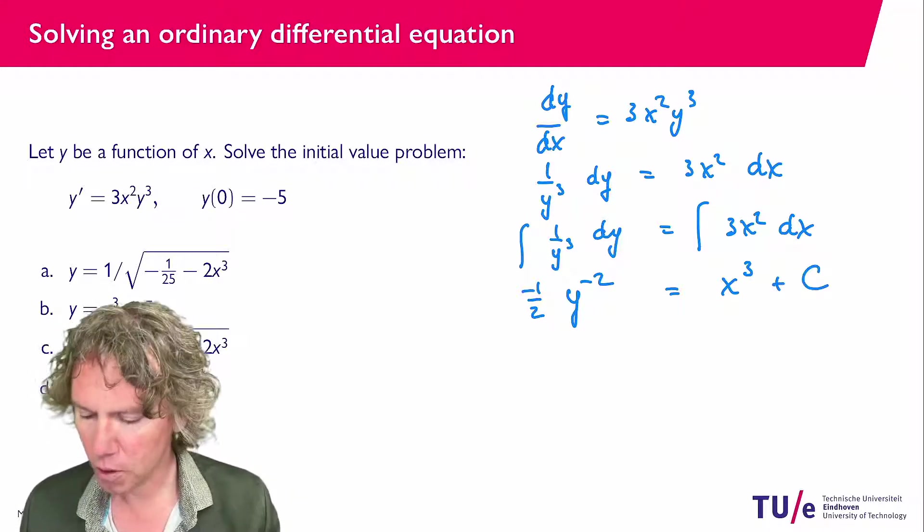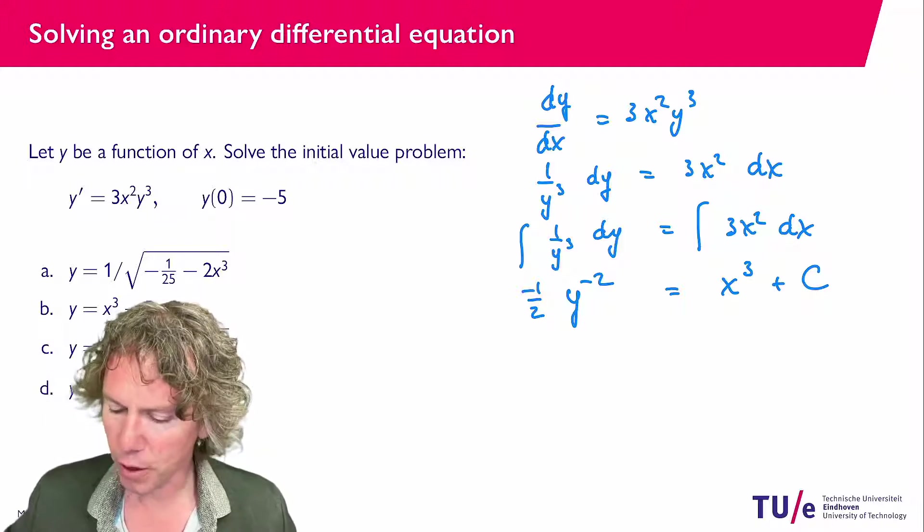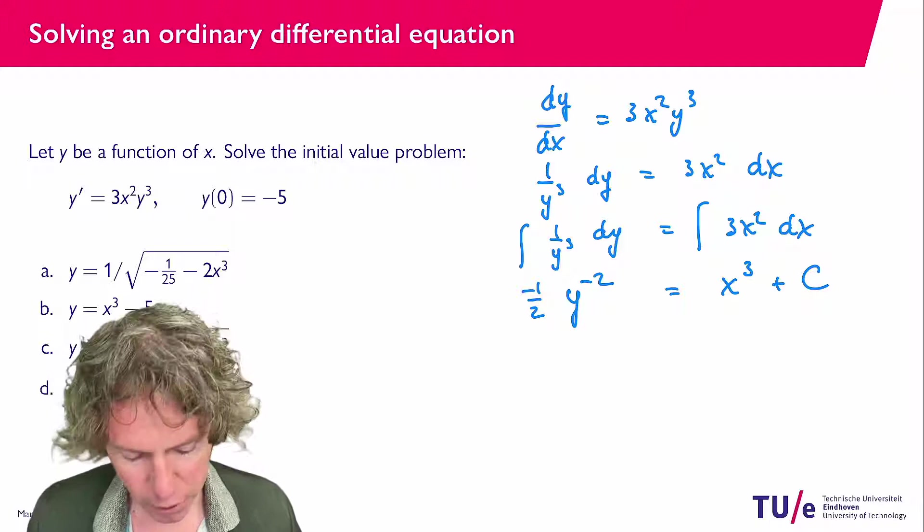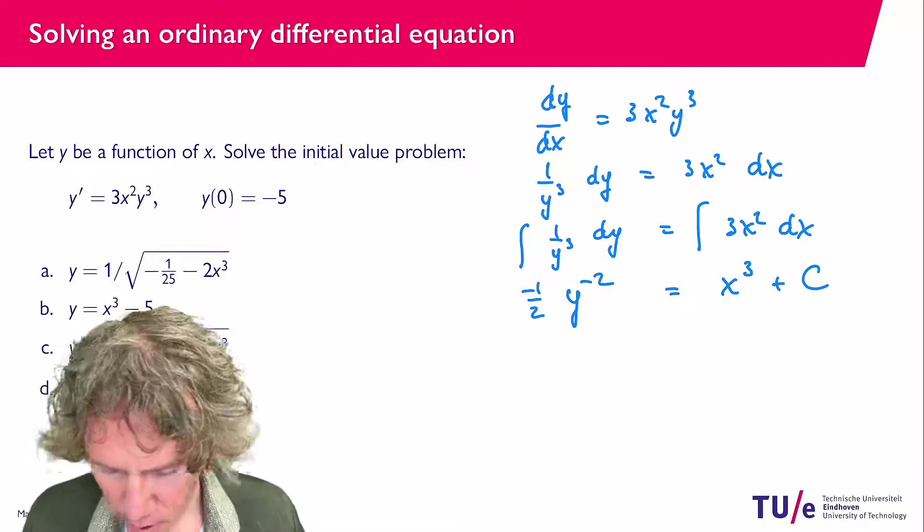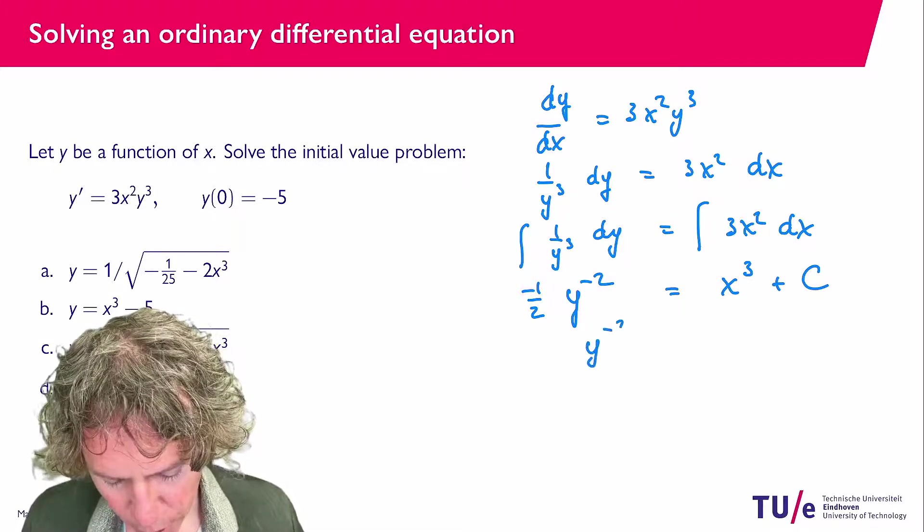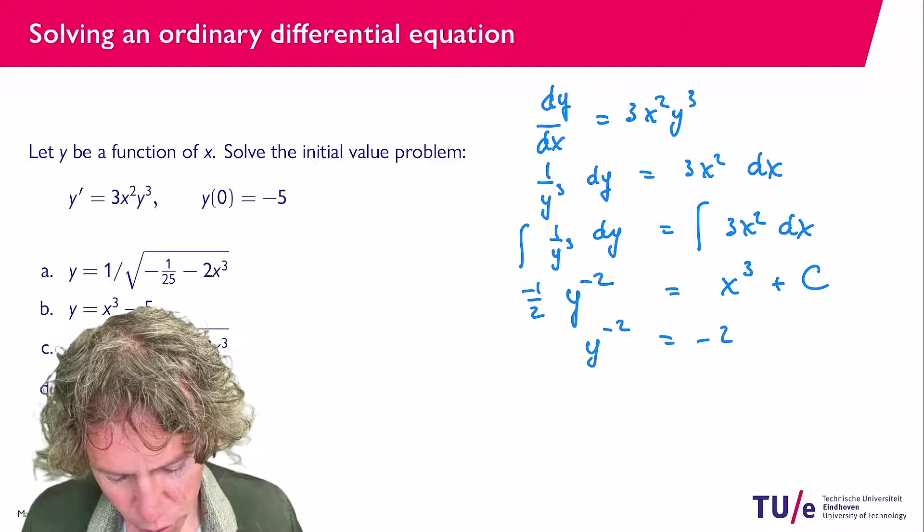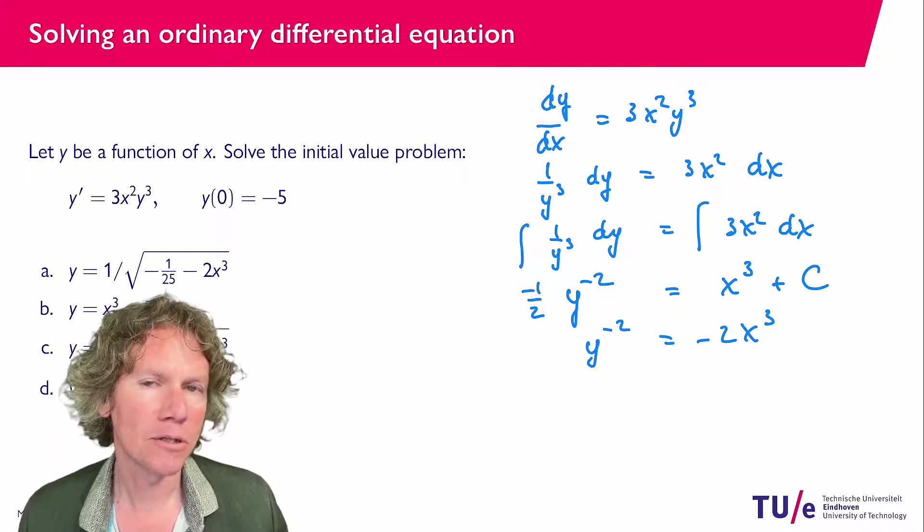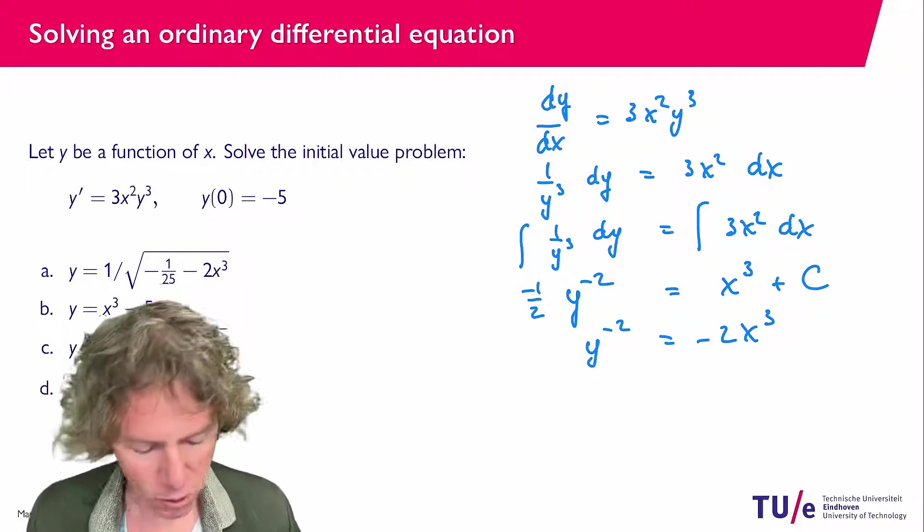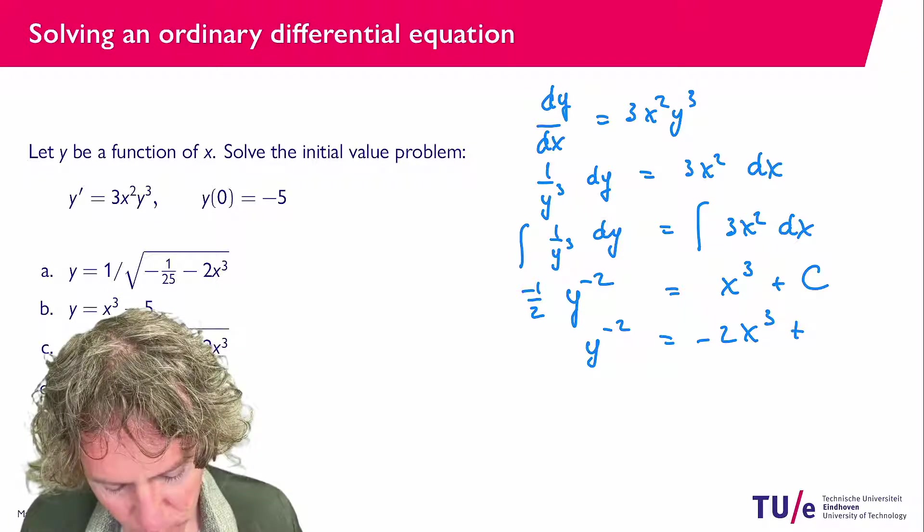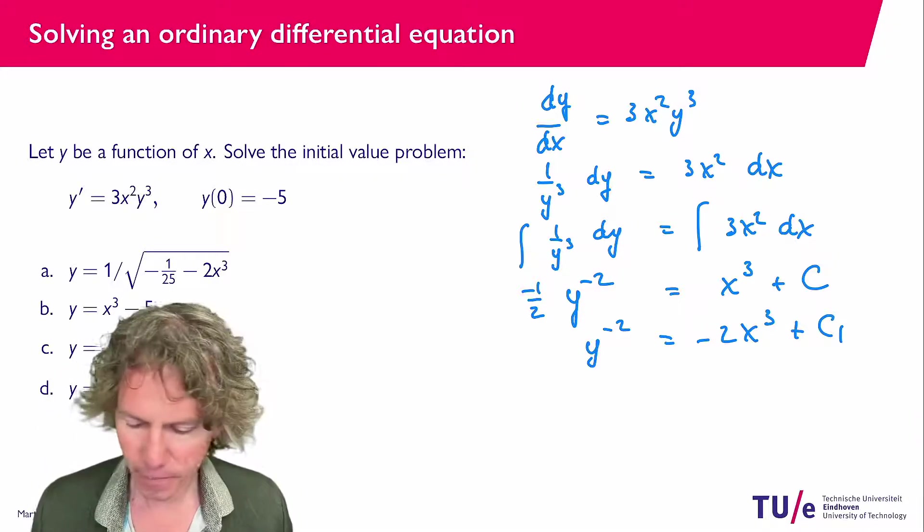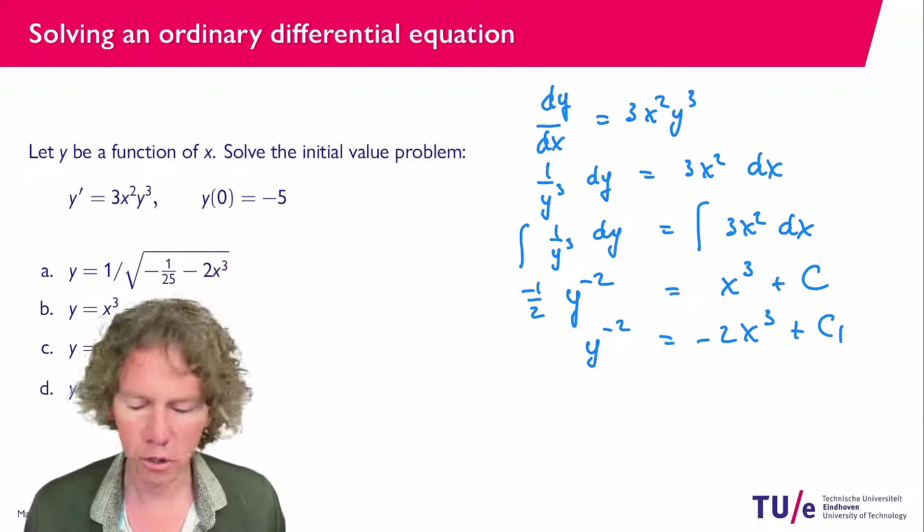So next what I'm going to do is rewrite this a little bit so let's multiply both sides of the equation with minus 2 then I find y to the power minus 2 equals minus 2x to the power 3 and then I could write minus 2c but this is an arbitrary constant so instead I'm going to say plus c1 and c1 is a new constant equal to minus 2c if you like.